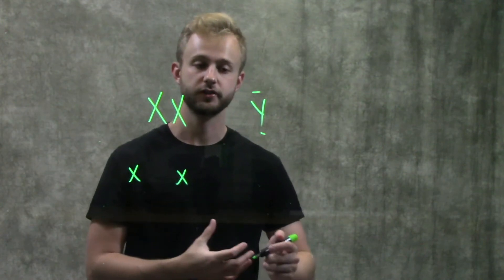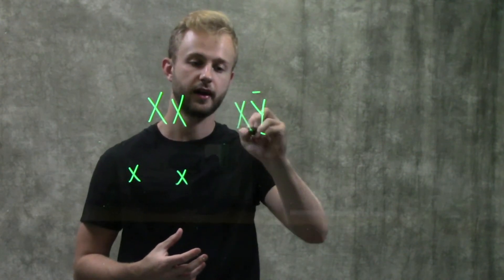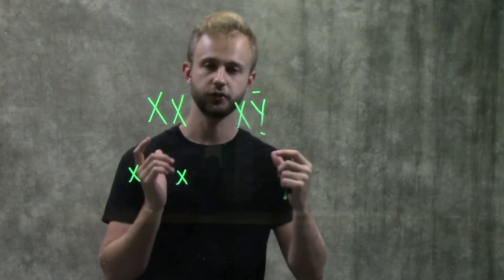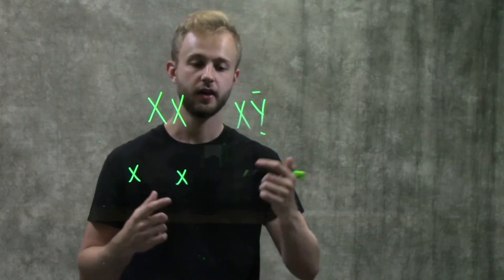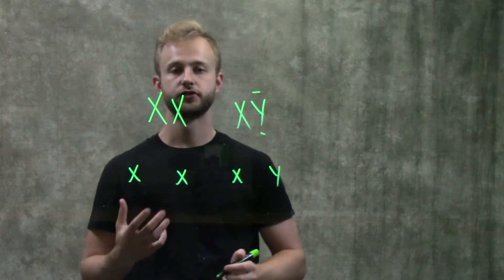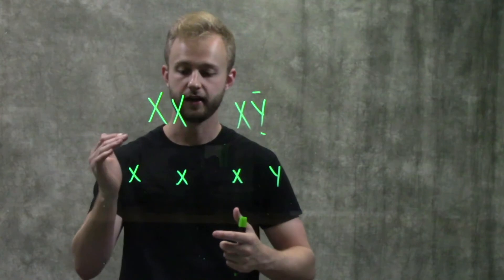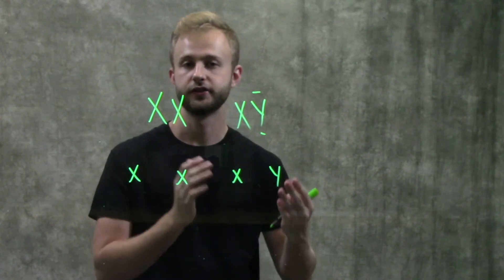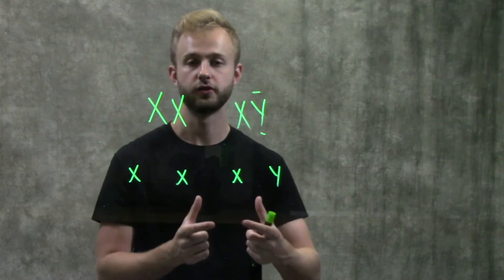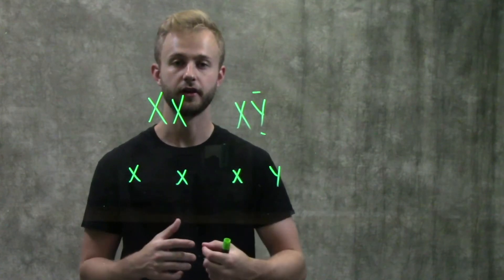With males, on the other hand, we have an X and a Y chromosome. So when a male makes his gametes, half of them will get an X and the other half will get a Y. Just from this, we can see that whether or not the child is going to be a male or a female really depends on which chromosome they get from their father.